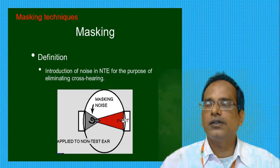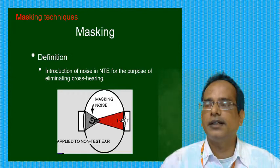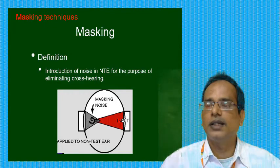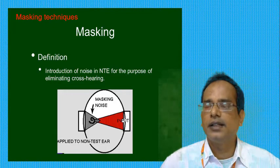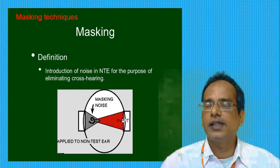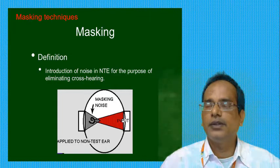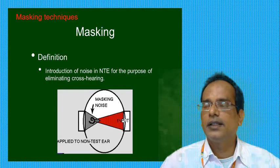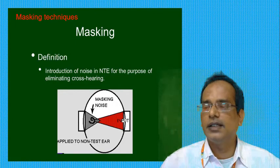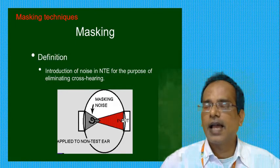Masking is not always needed when doing an air conduction audiogram. The crossover problem occurs to different extents depending on the earphones being used. Earphones that go around the ear run into crossover problems when the sound is about 40 dB or louder.